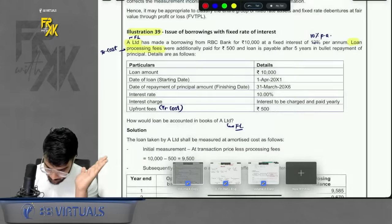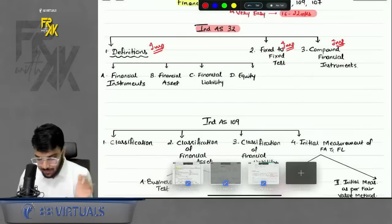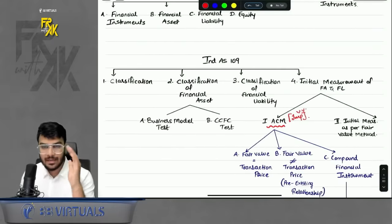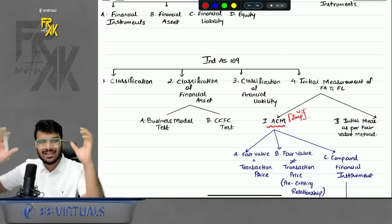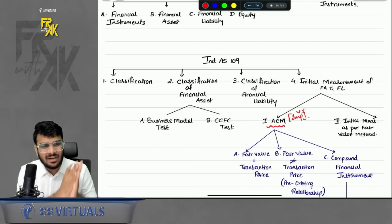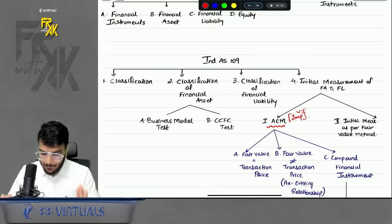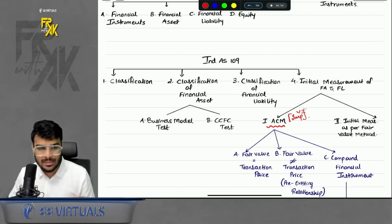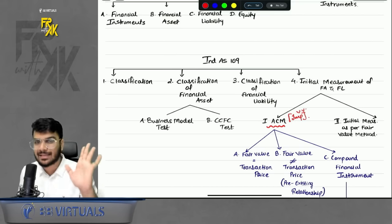That covers all the relevant points of IND AS 32: definitions of financial asset, financial liability, equity, the fixed-to-fixed test, and the compound financial instrument. From an exam point of view, being clear on these points is more than sufficient for IND AS 32.